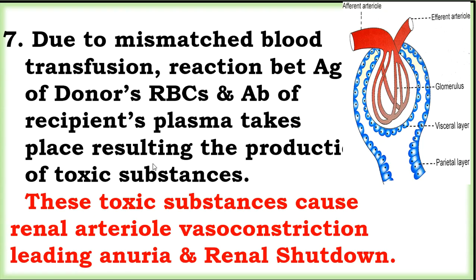Due to mismatched blood transmission, the reaction between the antigen of the donor RBC and the recipient's plasma antibody produces toxic substances. These toxic substances cause renal arterial vasoconstriction, leading to anuria and renal shutdown.